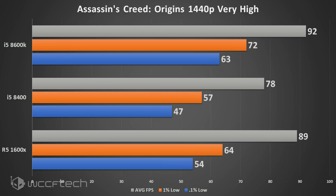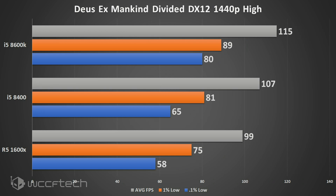Assassin's Creed Origins, like Monster Hunter World, loves cores and speed. A combination of both keeps things competitive, showing the 1600X barely behind the 8600K but quite a bit ahead of the 8400.